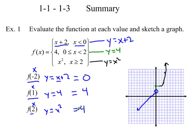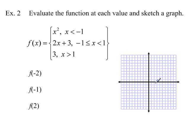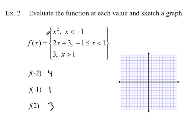That's the evaluation and sketch of the first example. Let's move to a second example — same kind: evaluate the function at each value and sketch the graph. I'll go quickly: f(-2) uses the first piece, (-2) squared equals 4. f(-1) uses the second piece: 2 times (-1) plus 3 equals 1. f(2) uses the third piece — since 2 is greater than 1 — and y equals 3, so the answer is 3.